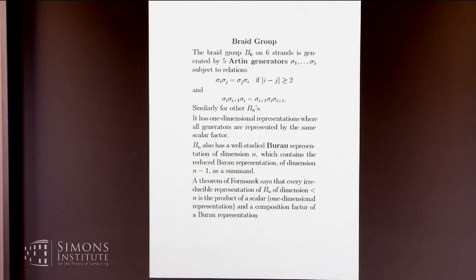There's a theorem of Formanek from, I think, the 1980s, that says that if you have an irreducible representation of the n-strand braid group, think six strands for my example, in a space of dimension less than six, like the five trees from the previous slide, then it's obtainable by taking a product of one of those trivial one-dimensional scalar things and a composition factor of a Burau representation, well, except when n is four, five, or six. And six is the case that I'm interested in.